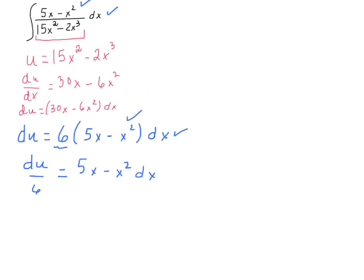Before we make our substitution, I want you to take a minute and look back at our original integral because what I would like to do is rewrite it just to make sure that you understand what it looks like. And really it looks something like this: (5x - x²)dx · 1/(15x² - 2x³).